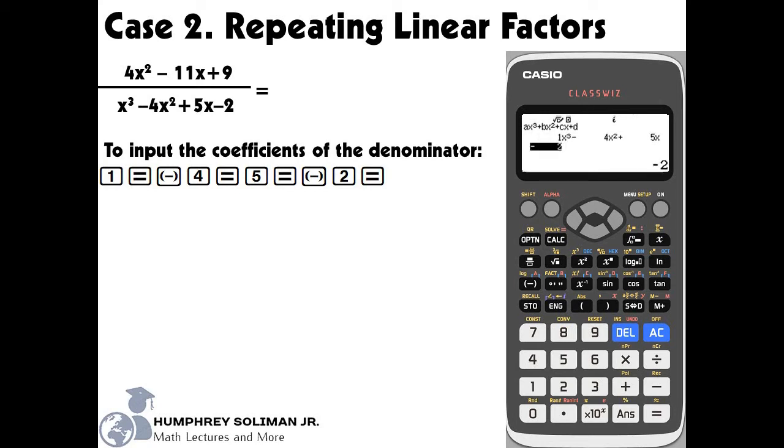We will follow the string of keys. After that, we will press the equals key to see our first value of x: x equals 2. This gives us the first factor, which is x minus 2. And if we press the equals key again, we will see our second value of x: x equals 1. This gives us the second factor, which is x minus 1.